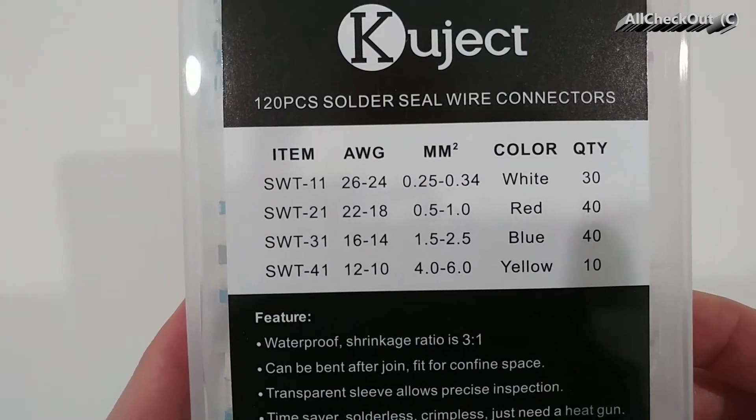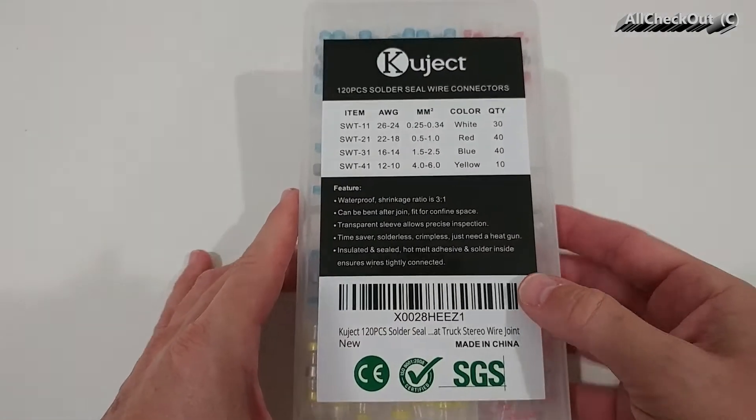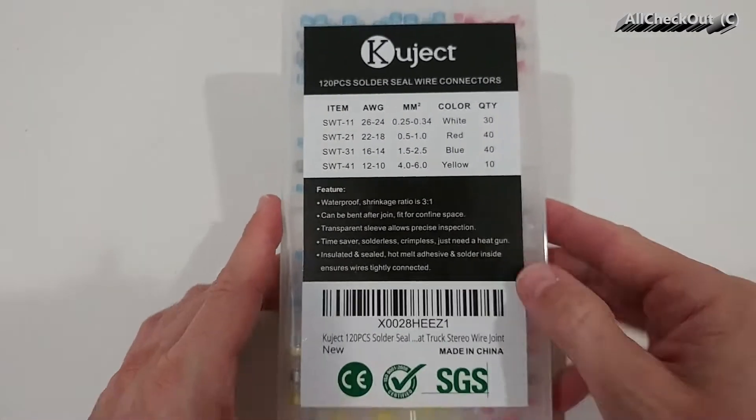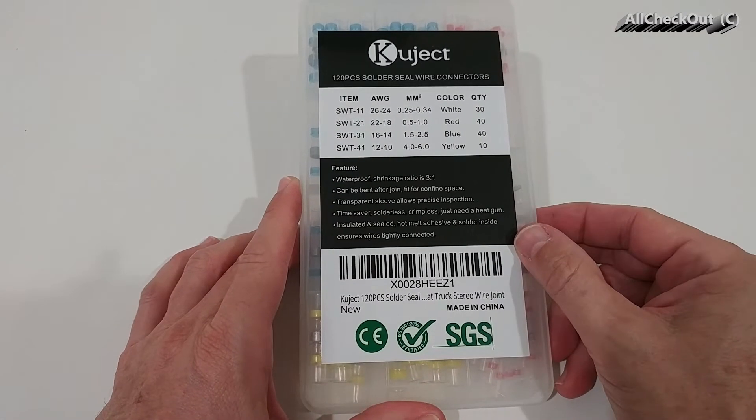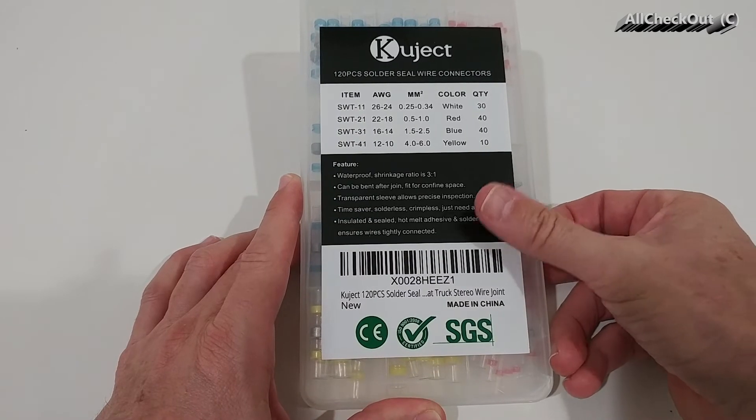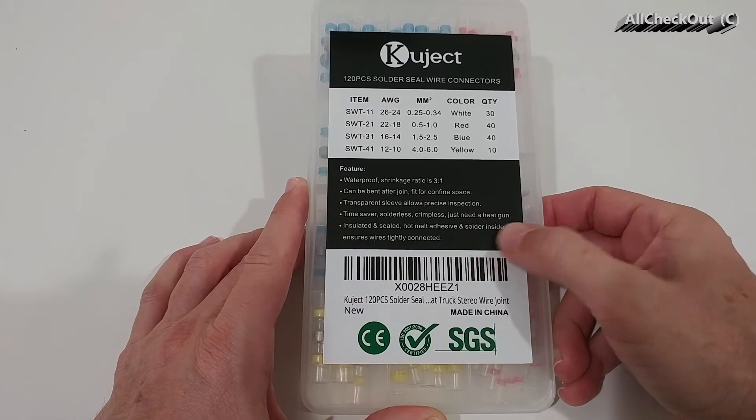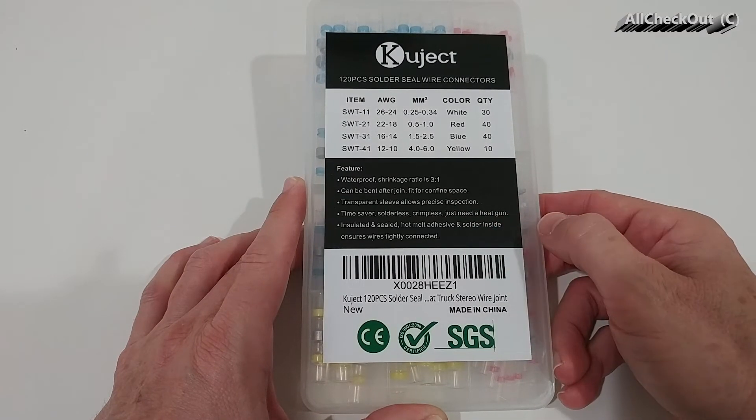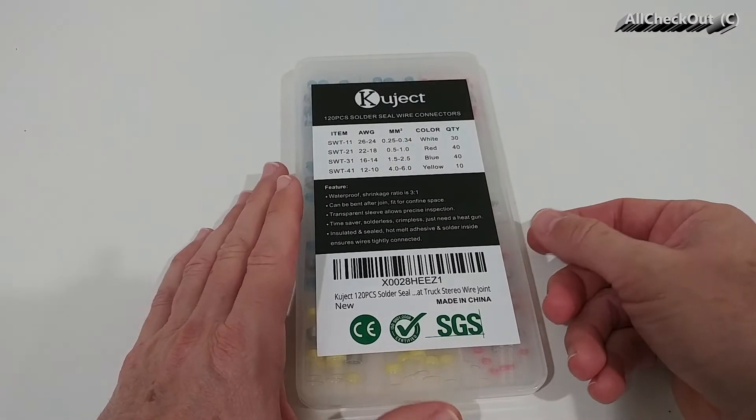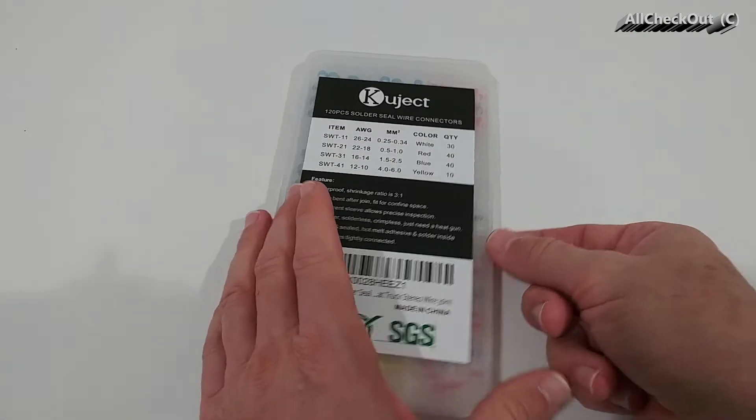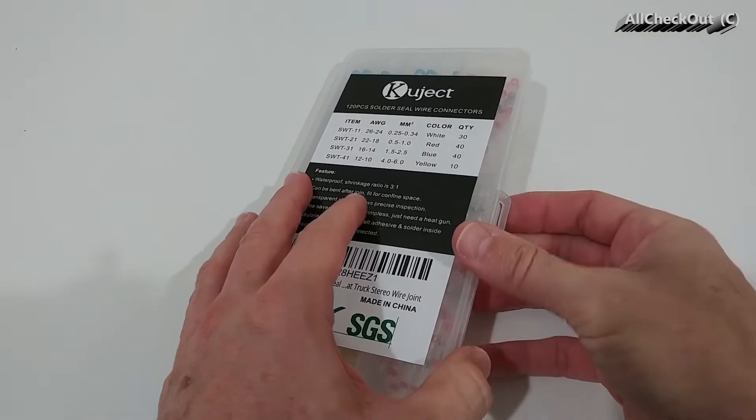Here are the color, quantity, and features. It says waterproof, shrink ratio 3 to 1, can even be bent after joining. Of course it says it needs a heat gun which I don't have, but usually it's possible to do it with some other heat source. So let's try and see how it looks and how it works.